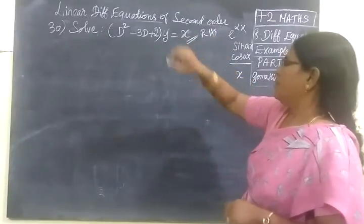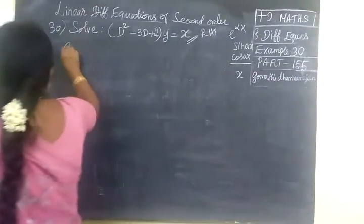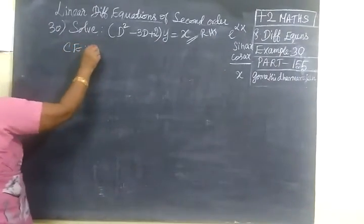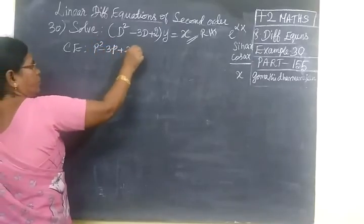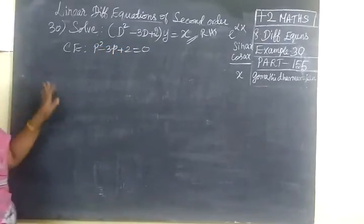Then the left hand side you are finding the complementary equations. P squared minus 3P plus 2 equal to 0. This is very easy.